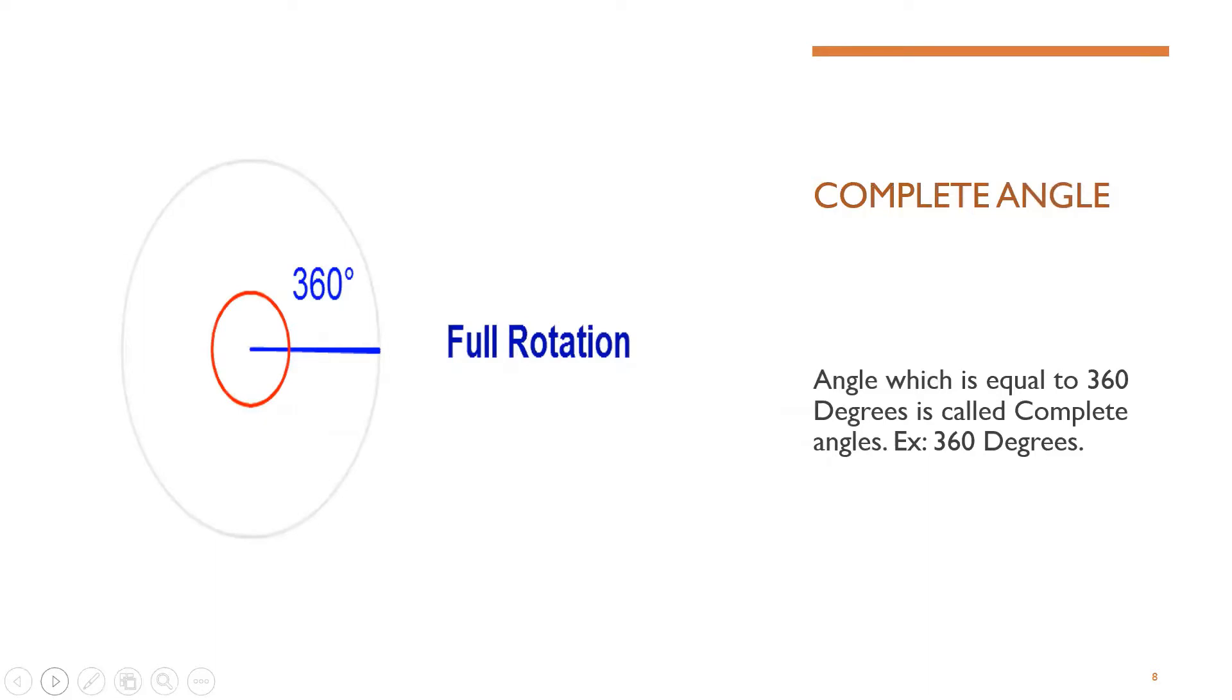Complete angle. An angle which is equal to 360 degrees is called as complete angle. Example 360 degrees. Here also, there is only one example of complete angles.